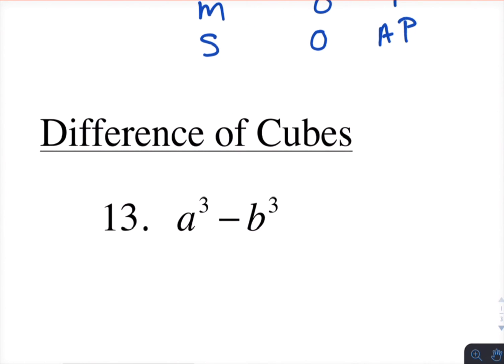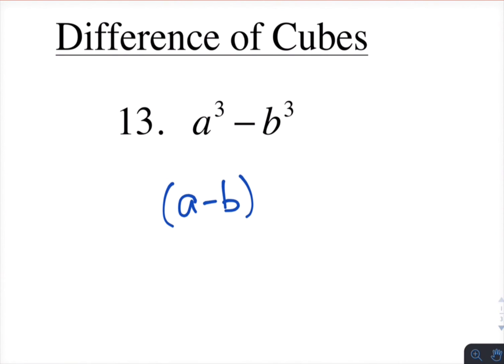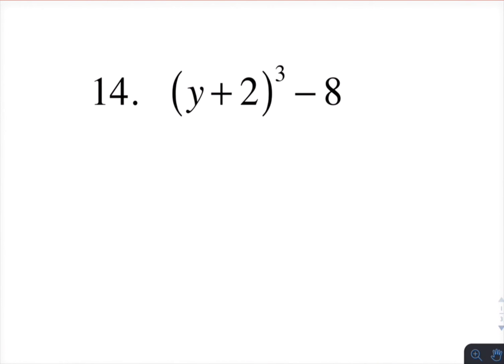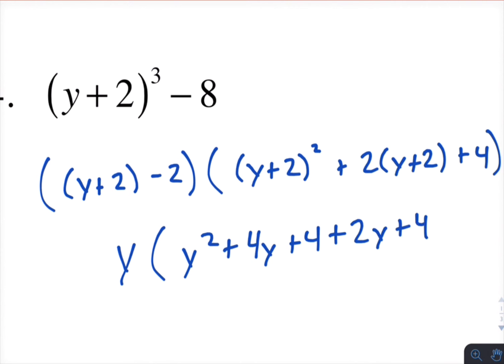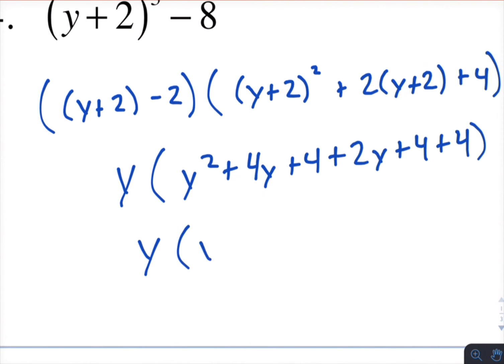And then there's the difference of cubes. Same thing applies. It's still a binomial times a trinomial. And the signs still are matching opposite plus. So with this one, the binomial is y plus 2 minus 2. And the trinomial is y plus 2 squared plus 2 times y plus 2 plus 4. So this turns out to just be y. Y squared plus 4y plus 4 plus 2y plus 4 plus 4, which comes out to be y squared plus 6y plus 12.